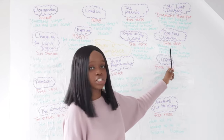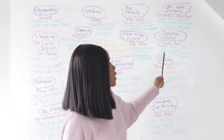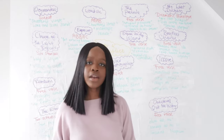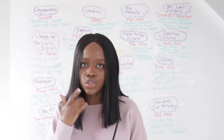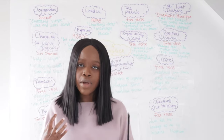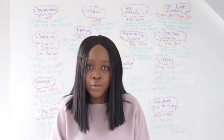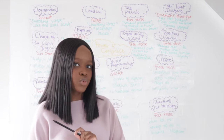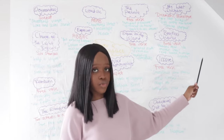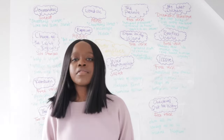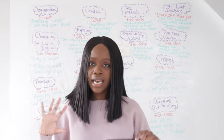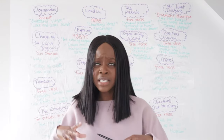The next poem is Bayonet Charge, written in free verse. The first quotation is 'patriotic tear... like molten iron' — a simile showing the soldier running into the charge is fearful but remembers why he's doing it, propelled by a wish to serve his country. This wish fades as sheer survival stares him in the face. The final quotation uses a rule of three: 'king, honour, human dignity,' showing that the ideals that led these men to war become luxuries when faced with death.